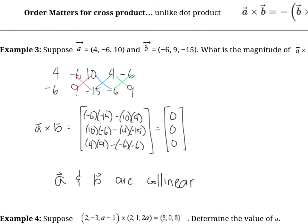Collinear means they're along the same line or go in the same direction. We can check this: one vector could be a multiple of the other. For example, going from 4 to negative 6 means multiplying by negative 1.5 — and the same scalar works for the y and z components: negative 6 times negative 1.5 is 9, and 10 times negative 1.5 is negative 15. So because A and B are scalar multiples of each other, they're collinear. If the cross product comes out to zero, those two vectors are collinear.